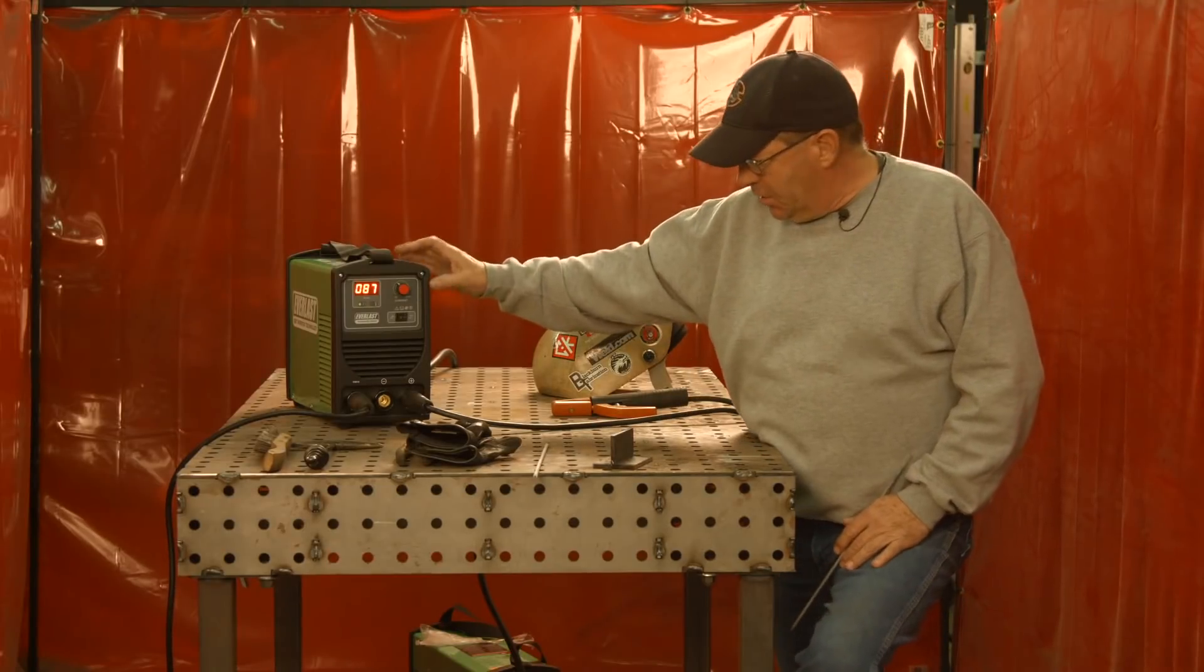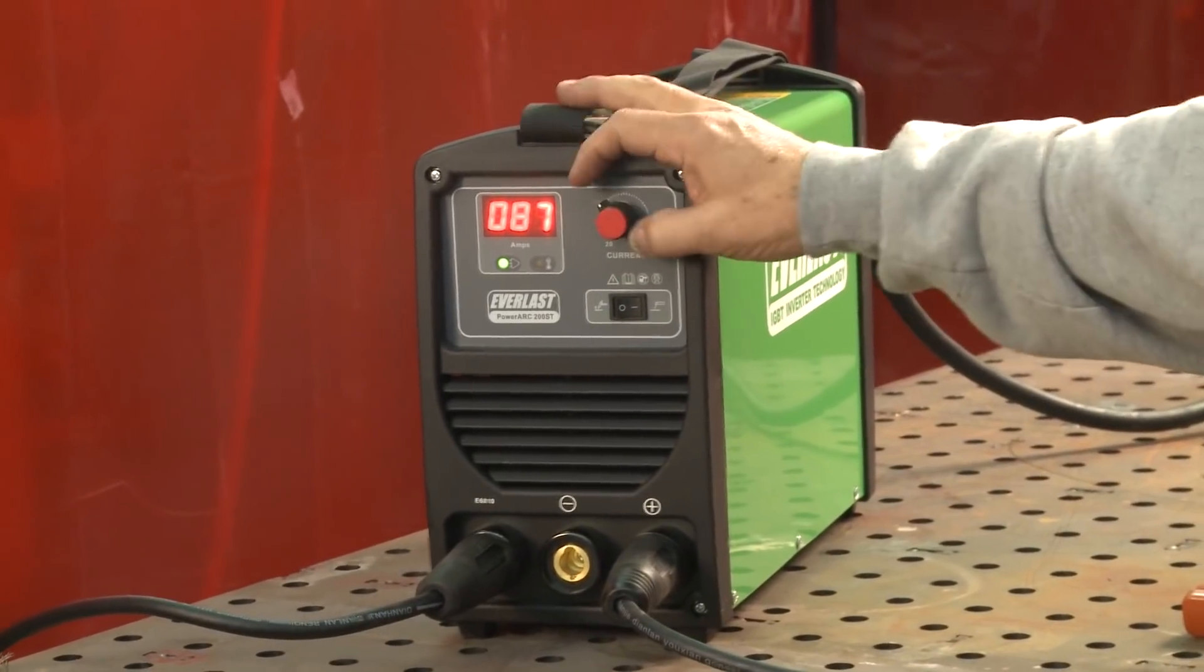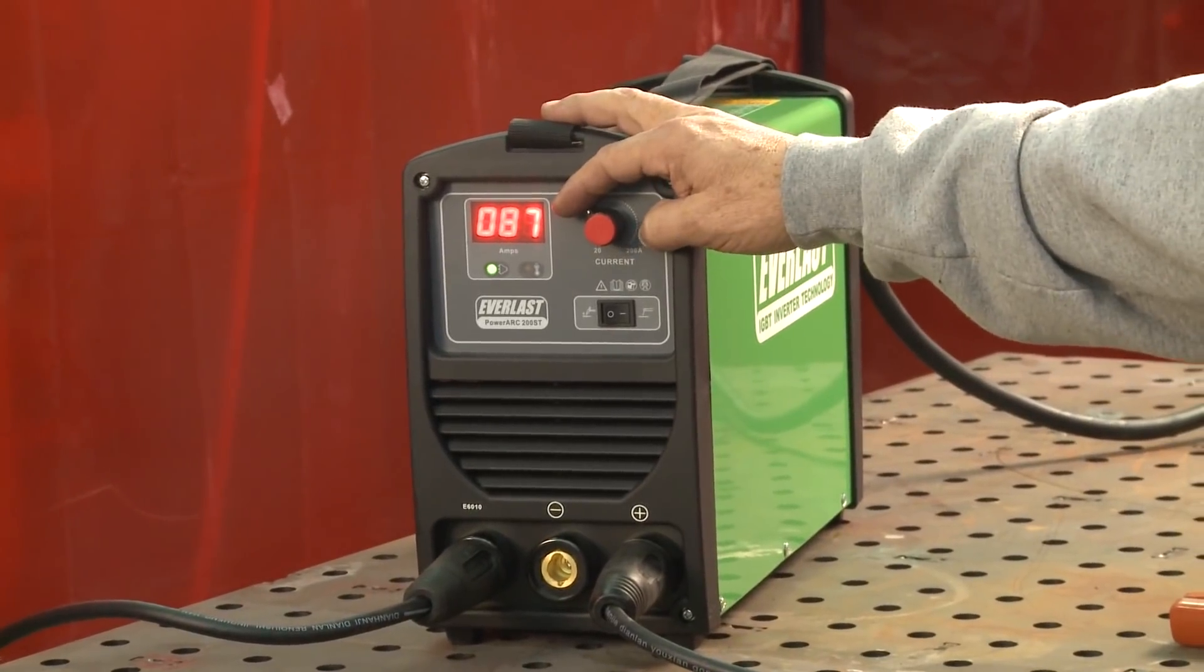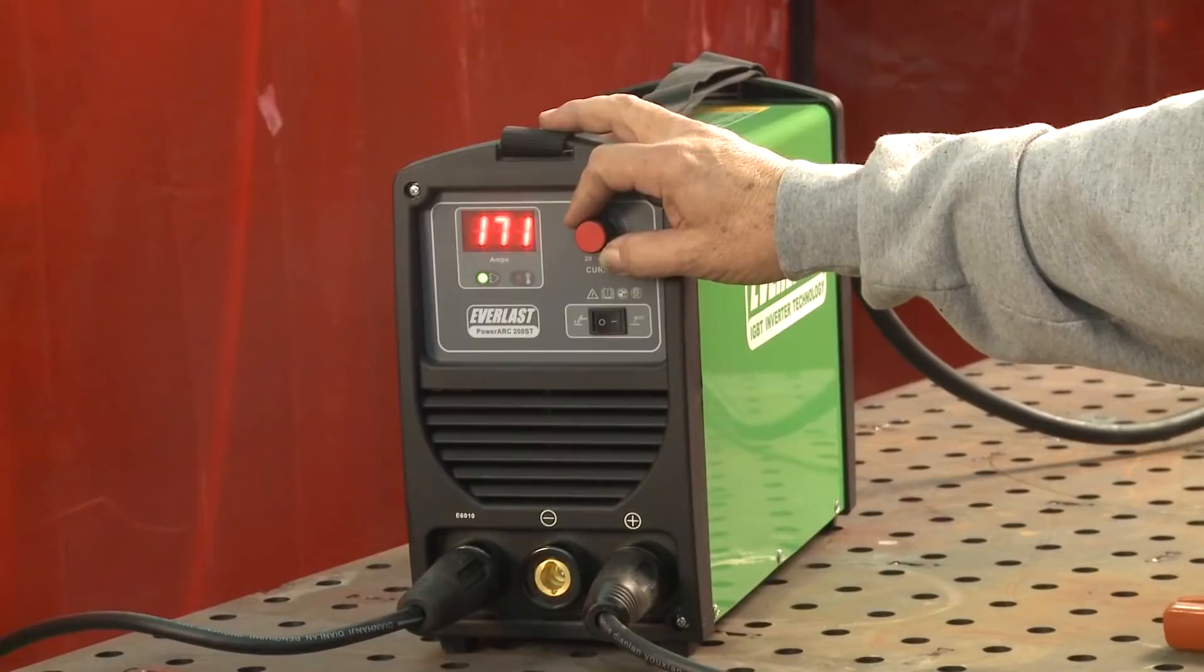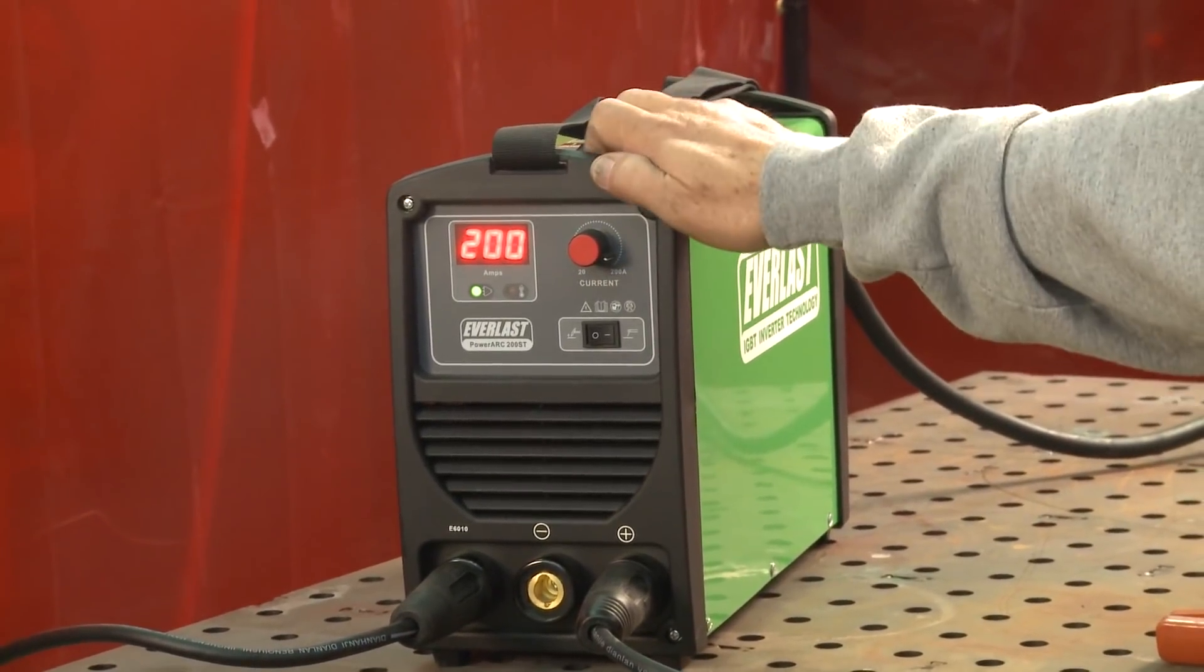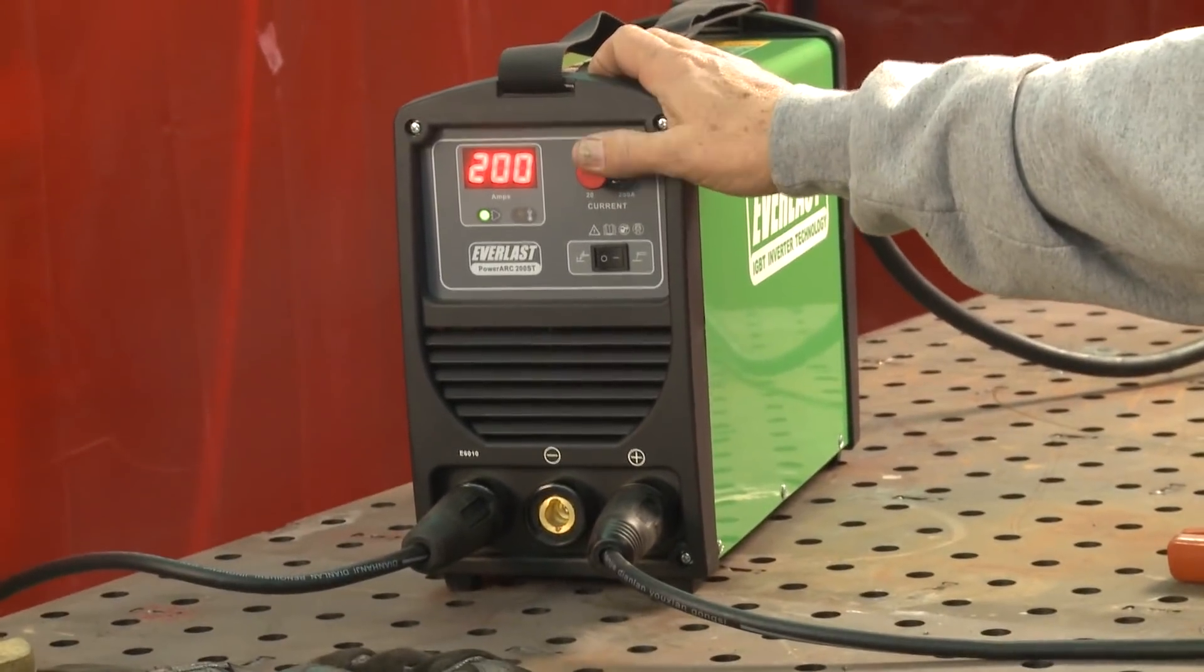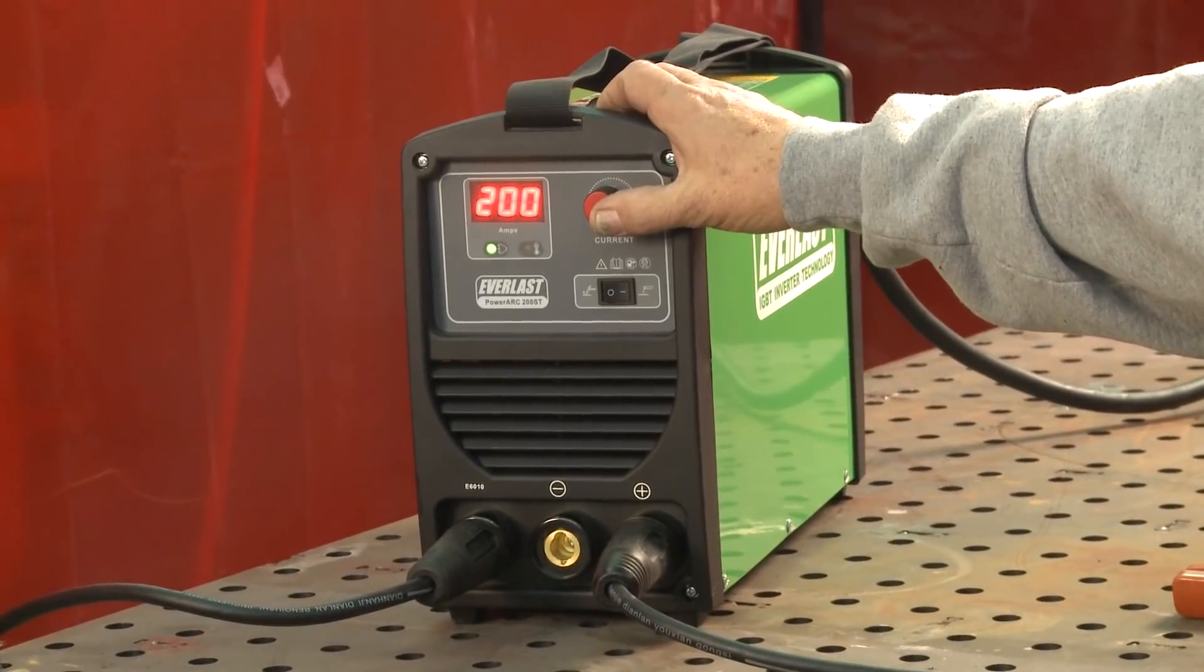Welcome to Weld.com. I'm going to feature a little machine here that we're setting up. Everlast PowerArc 200 ST. We plug this into 220 volt, so we have 200 amps available.